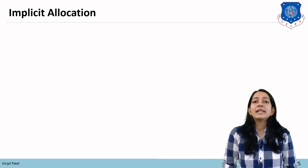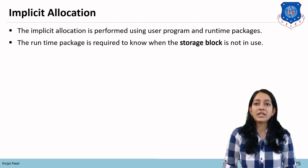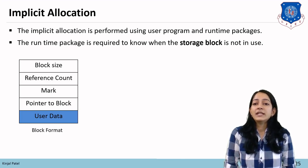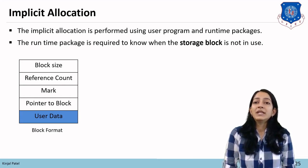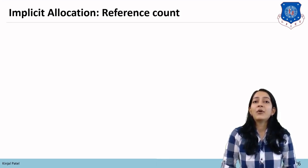The next technique is implicit allocation. Implicit allocation is performed using the user program and runtime packages. The runtime package is required to know when a storage block is not in use. The block format includes: user data, pointer to block, mark, reference count, and block size. These are the different fields used to perform implicit allocation.